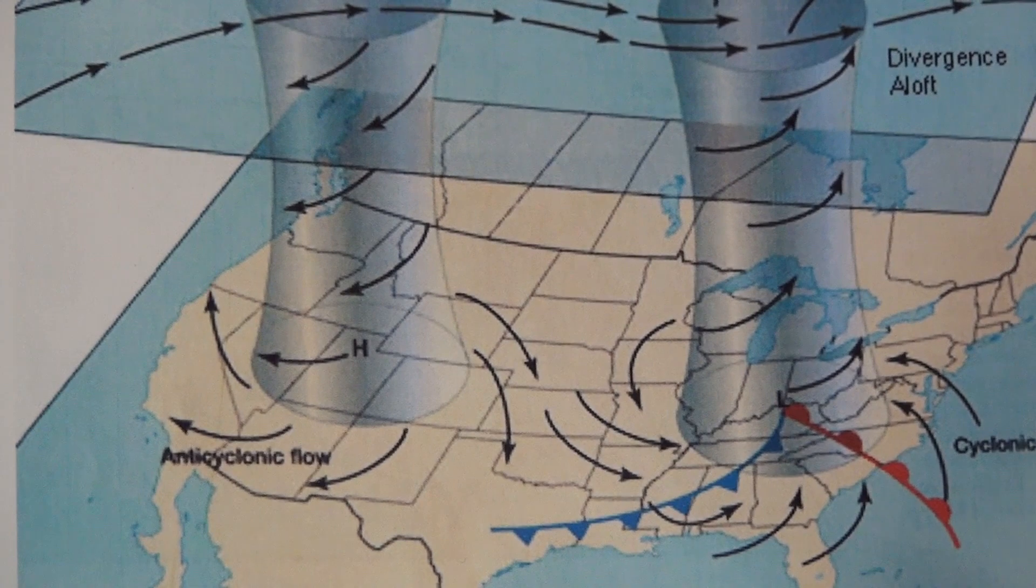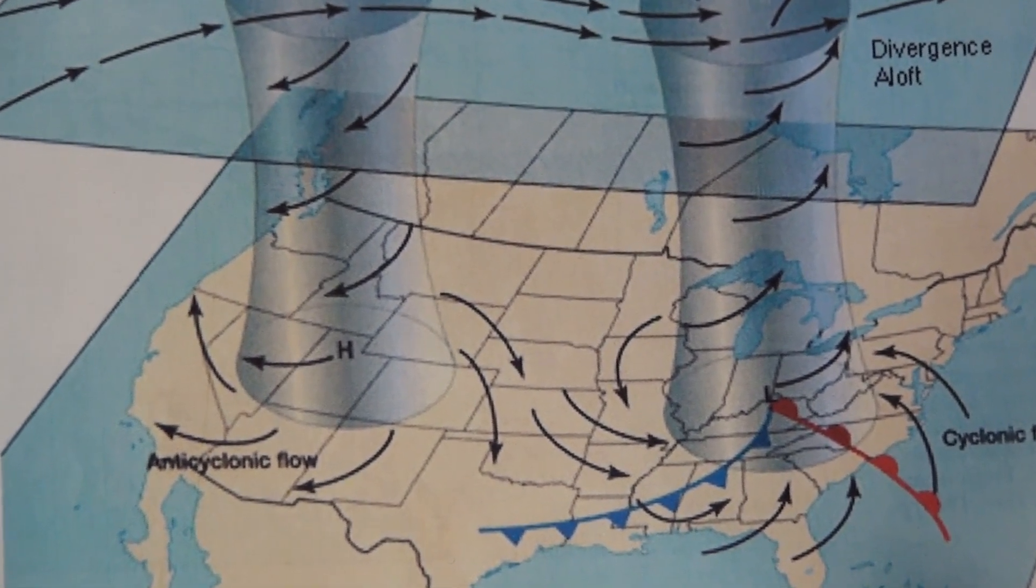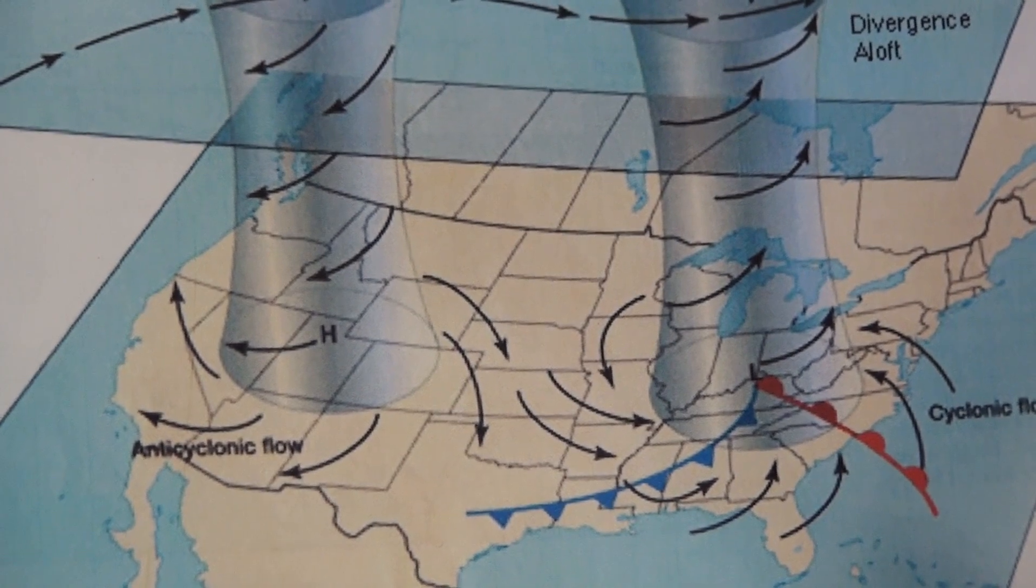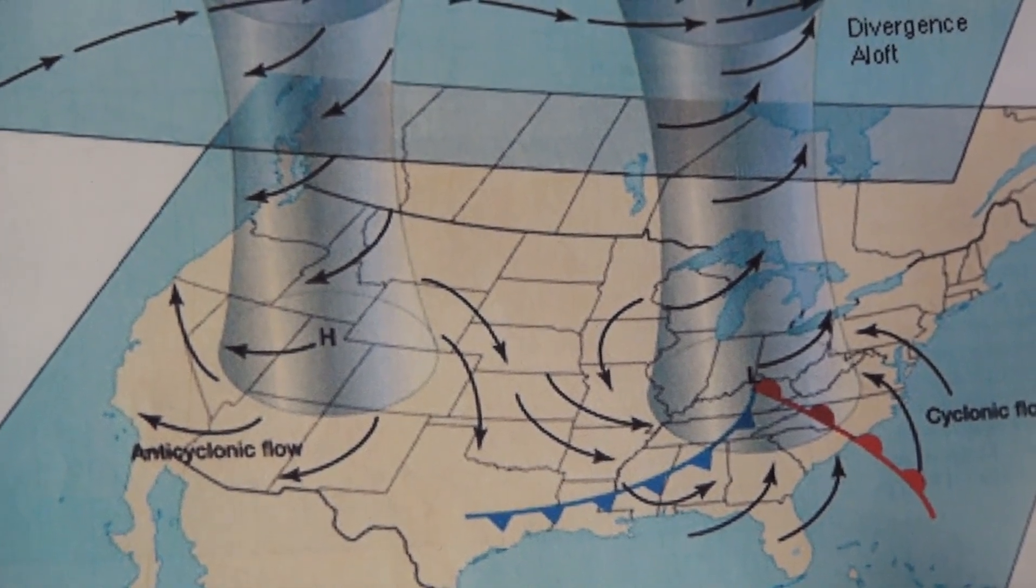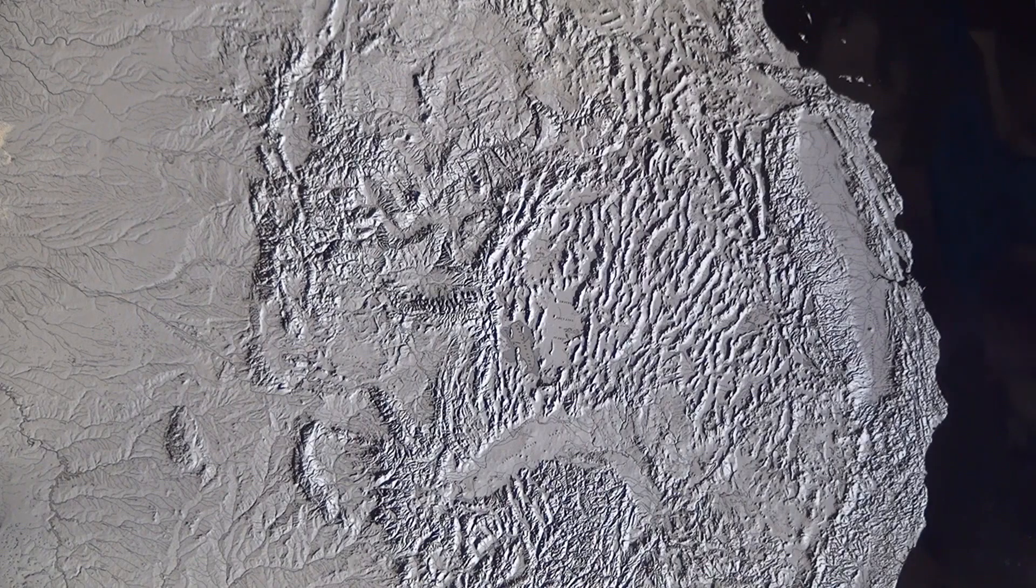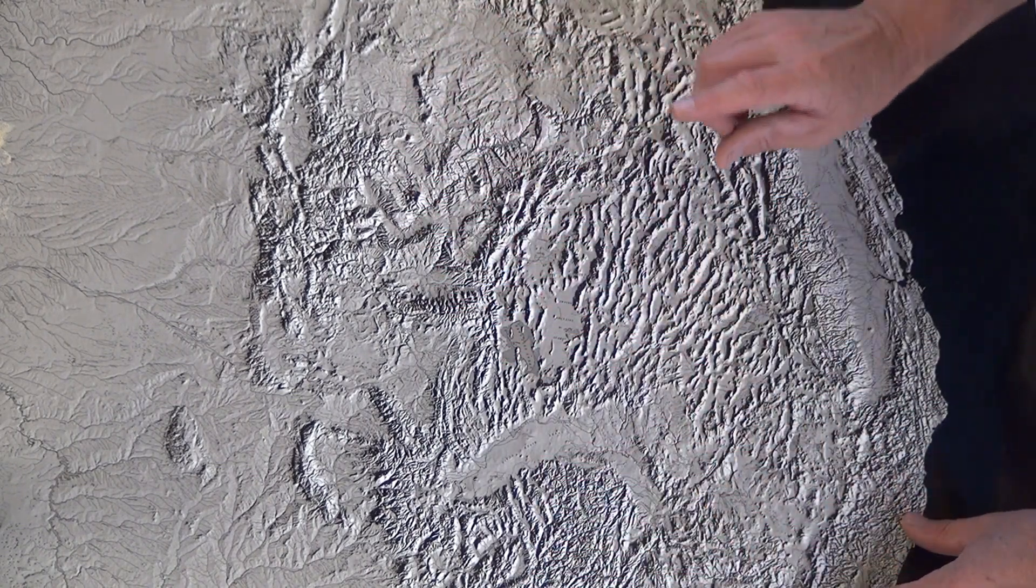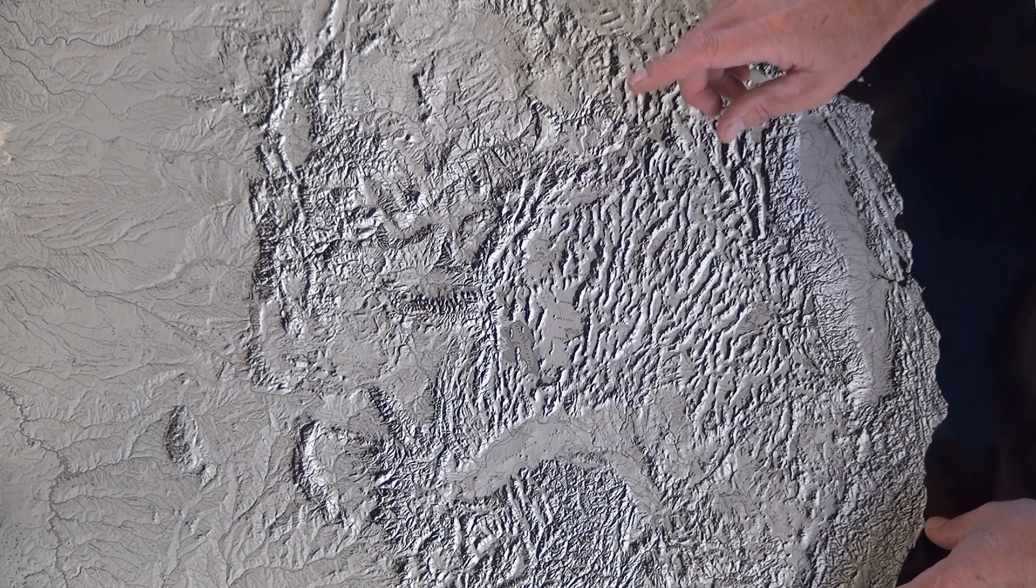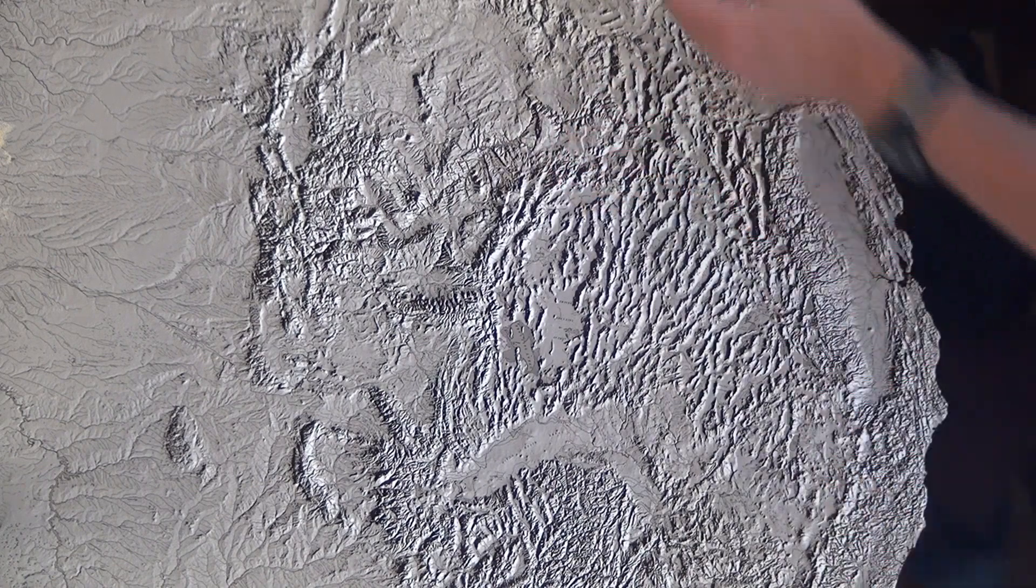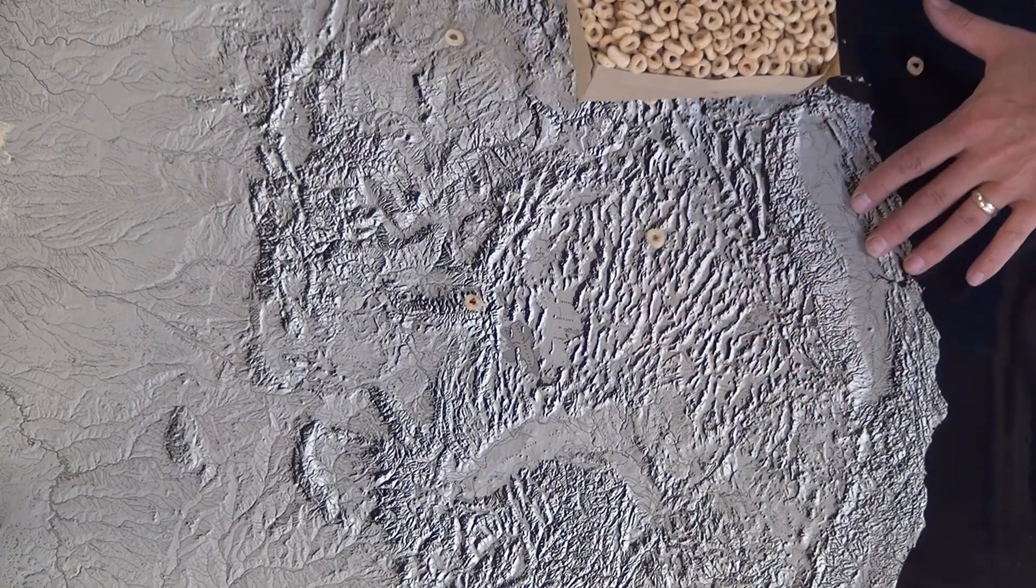And finally, I wanted to talk about anticyclonic flow or how high pressure diverges at the surface. In this diagram you can see it. And finally I want to show it with the Cheerios as I drop those air molecules represented by Cheerios and they spread out at the surface. We're looking at the United States again. This is the west of the United States. The third characteristic of a high pressure was that air diverges at the surface just like the diagram. So let me show that with the sinking air molecules.